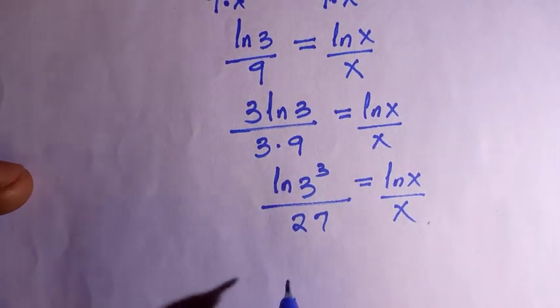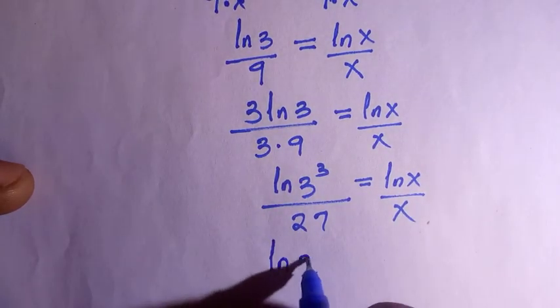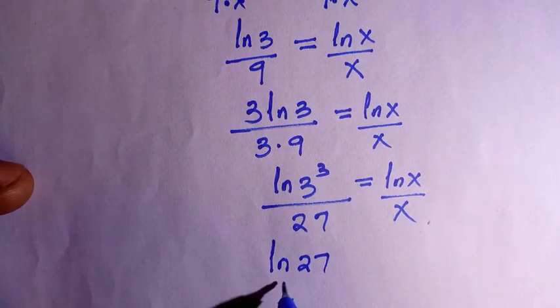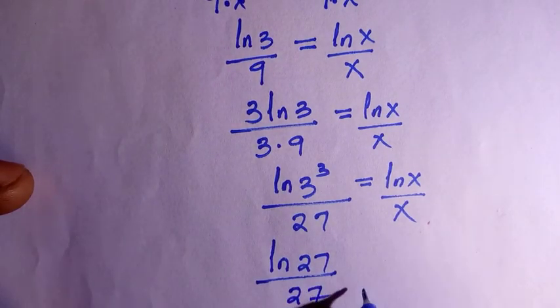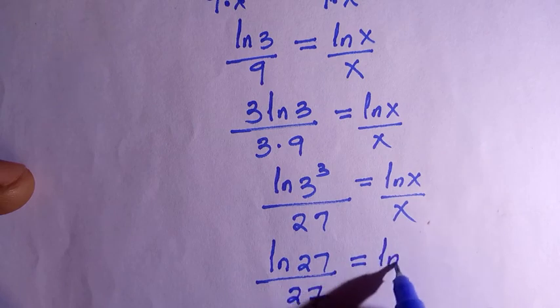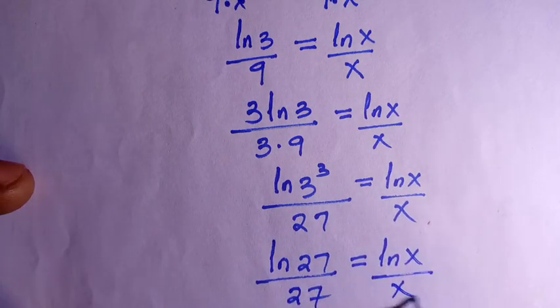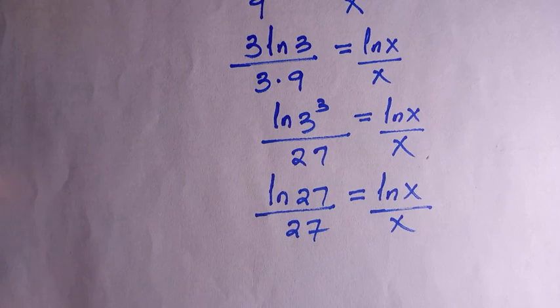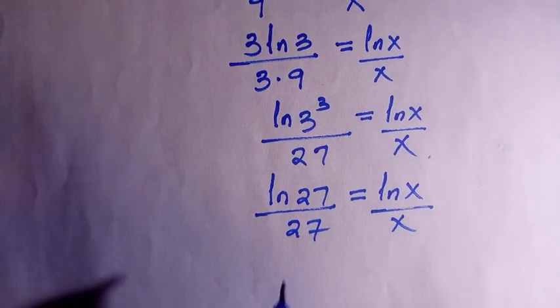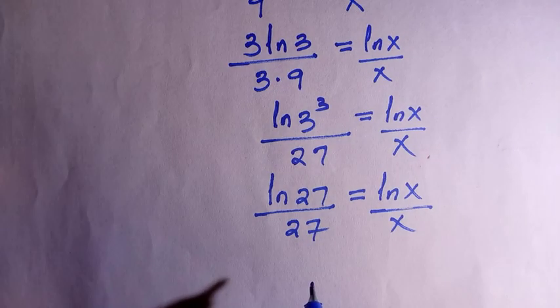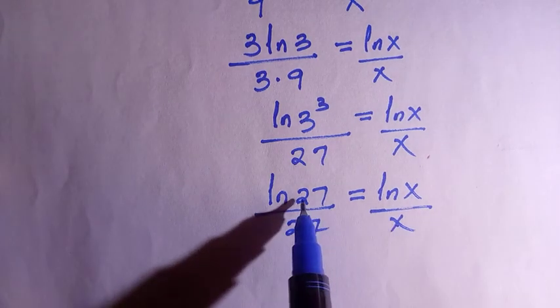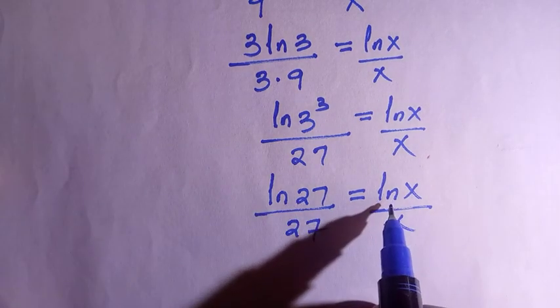3 to the power of 3 is 27, so we have ln(27)/27 equals ln(x)/x. Now it makes sense that if we are able to compare this, it will give us the answer.